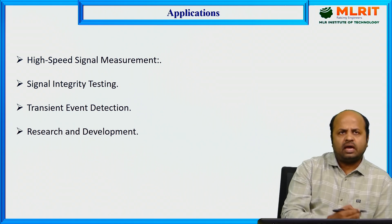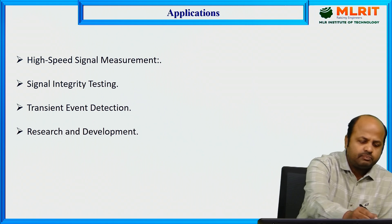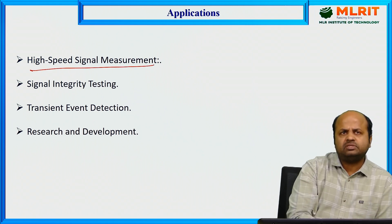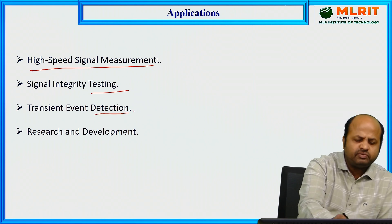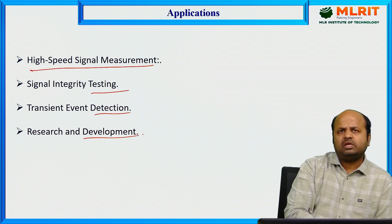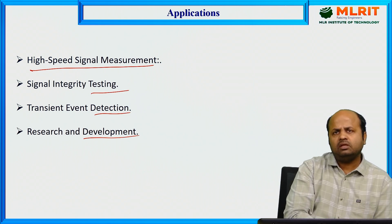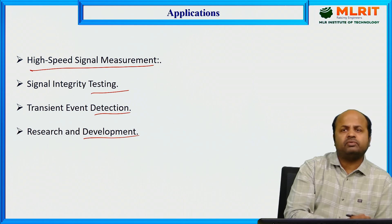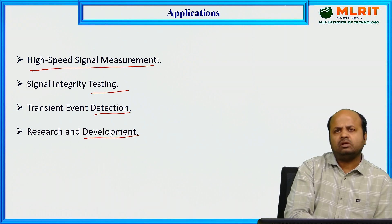Applications of a sampling oscilloscope include high-speed signal measurement, signal integrity testing, transient event detection, and research and development. In conclusion, sampling oscilloscopes are used for displaying high-frequency signals, whereas a normal CRO or normal oscilloscope cannot. This is one of the major applications of the sampling oscilloscope.